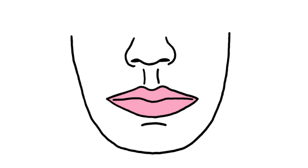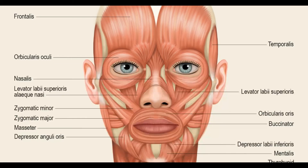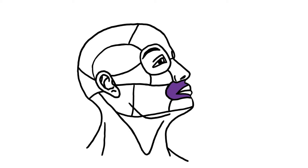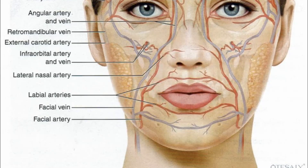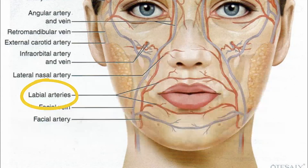You've got the labial angle. The only muscle here is the orbicularis oris. You've got labial glands. For the vessels, you've got the facial artery and vein with the superior and inferior labial arteries.